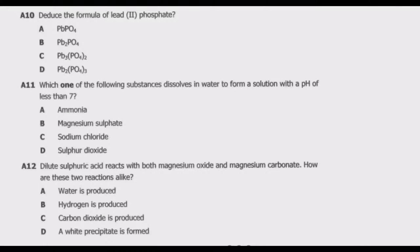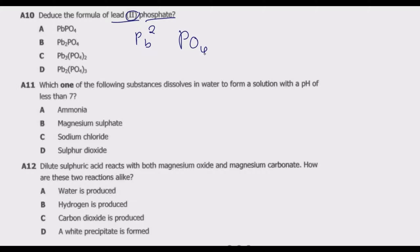Question A10: deduce the formula of lead(II) phosphate. Lead is a metal and because it's lead 2, it has a valence of 2. The formula for lead is Pb. Then phosphate is given by the formula PO4, with a valence of 3.